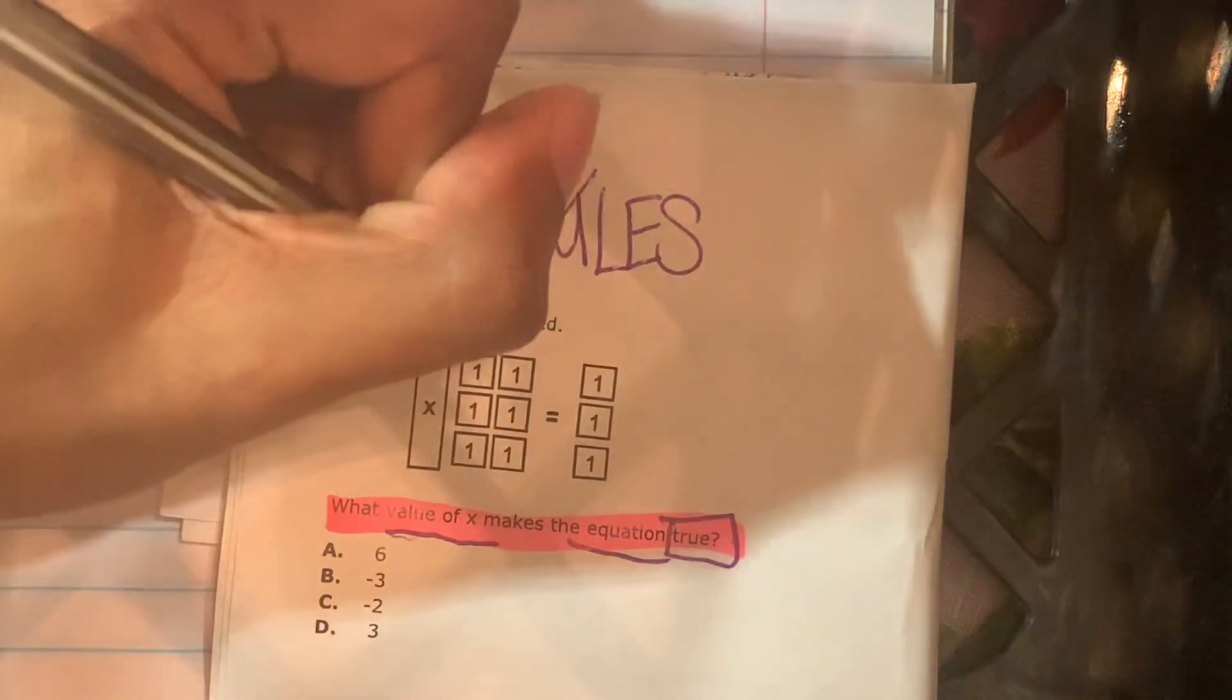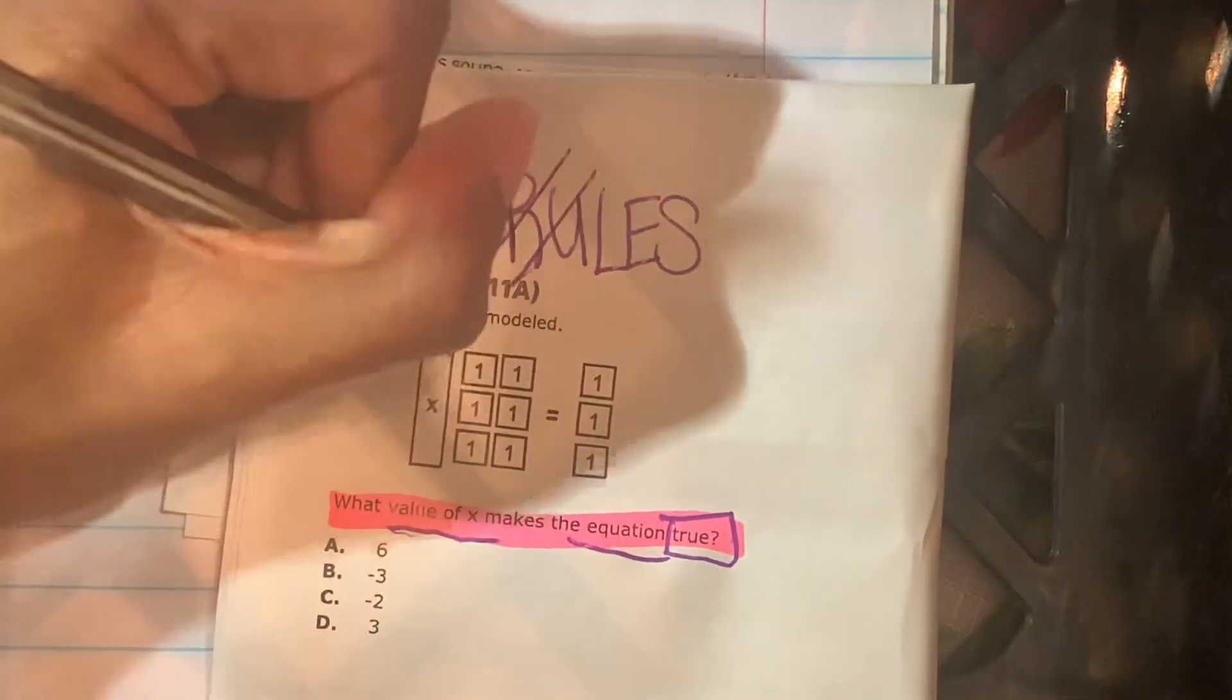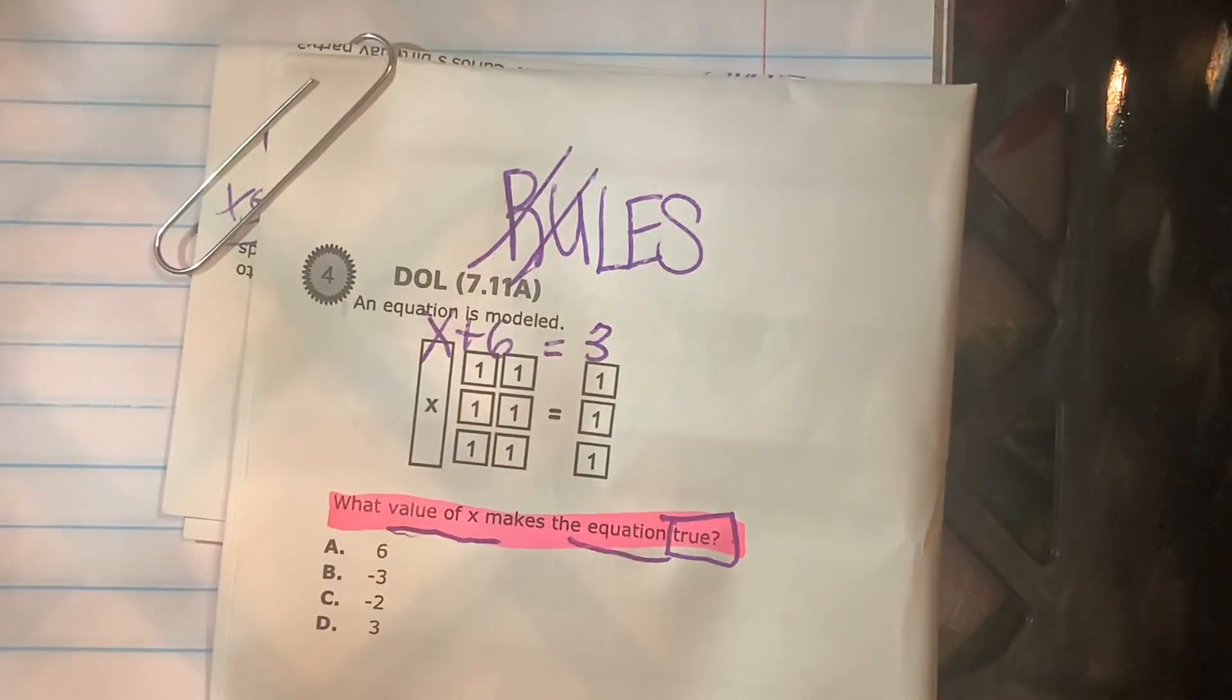So this equation is going to be x plus 6 is equal to 3. All right, I'm going to write this out to the side, so it's a little bit clearer. x plus 6 is equal to 3.